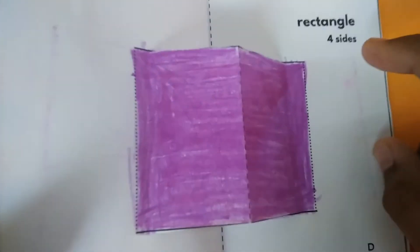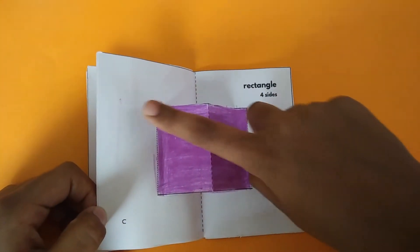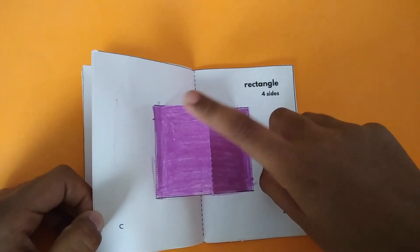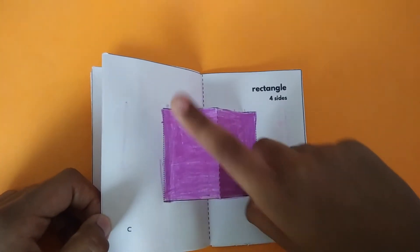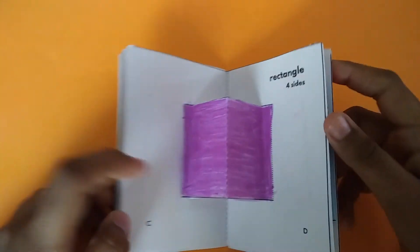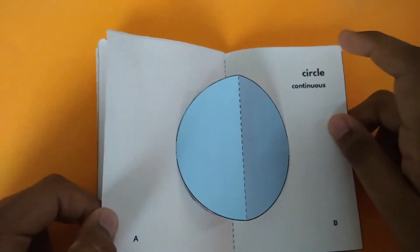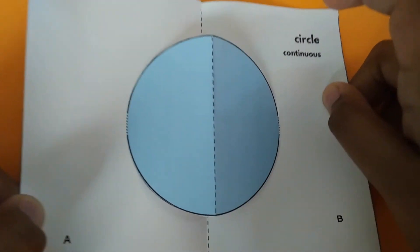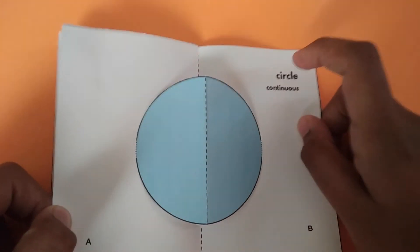This is a rectangle. It has four sides. One, two, three, four. This is a circle. It has no sides.